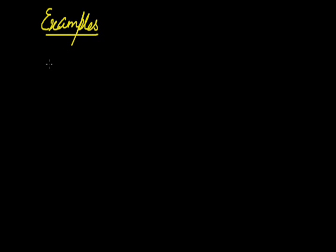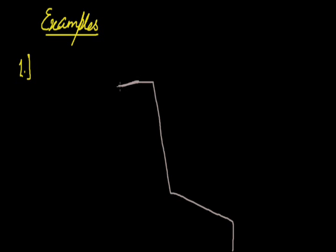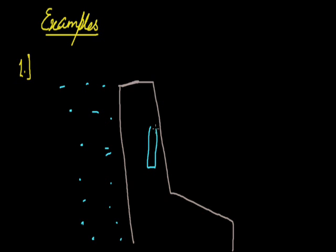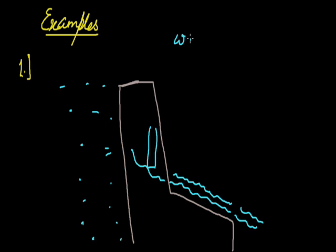We can have some examples. The first example is water stored behind a dam. When water is stored, it possesses potential energy. When the gates of the dam are opened, this potential energy is converted into kinetic energy. The moving water can then rotate a turbine and produce electricity.